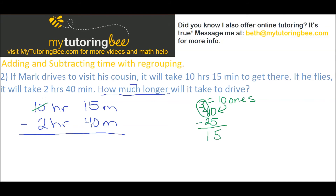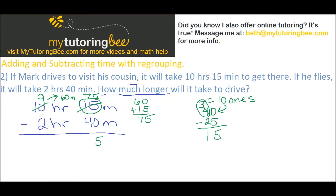Now let's translate that to our time. I'm going to take away an hour, but hours count for 60 minutes — not 10. So I add 60 to the 15 minutes I already have, giving me 75 minutes. I regroup the 15 minutes as 75 minutes. Now I have enough to subtract: 5 minus 0 is 5, 7 minus 4 is 3, and then subtracting the hours, 9 minus 2 is 7. That gives me 7 hours and 35 minutes.